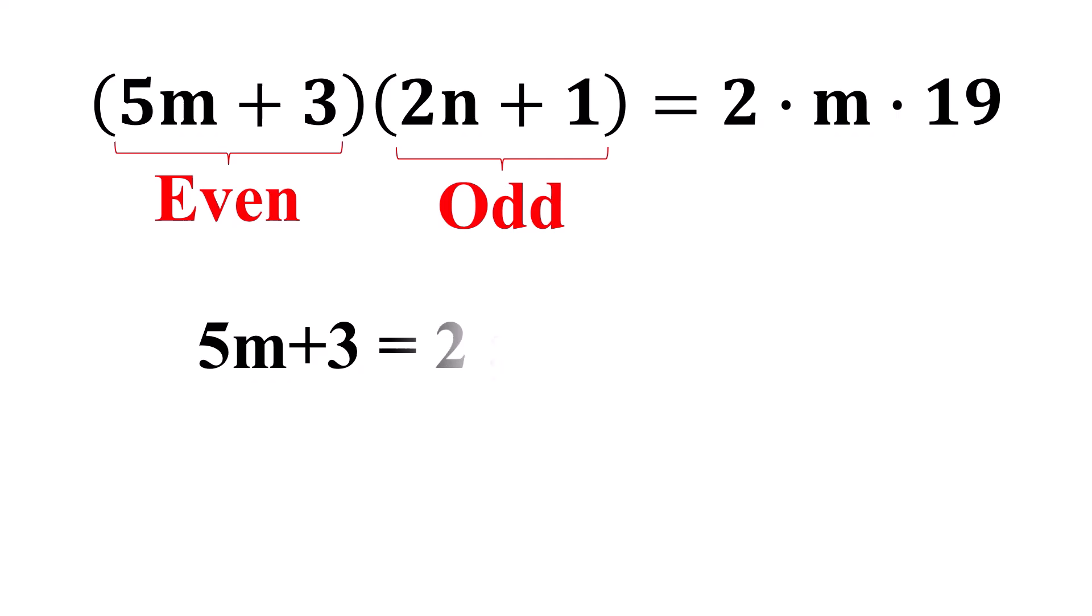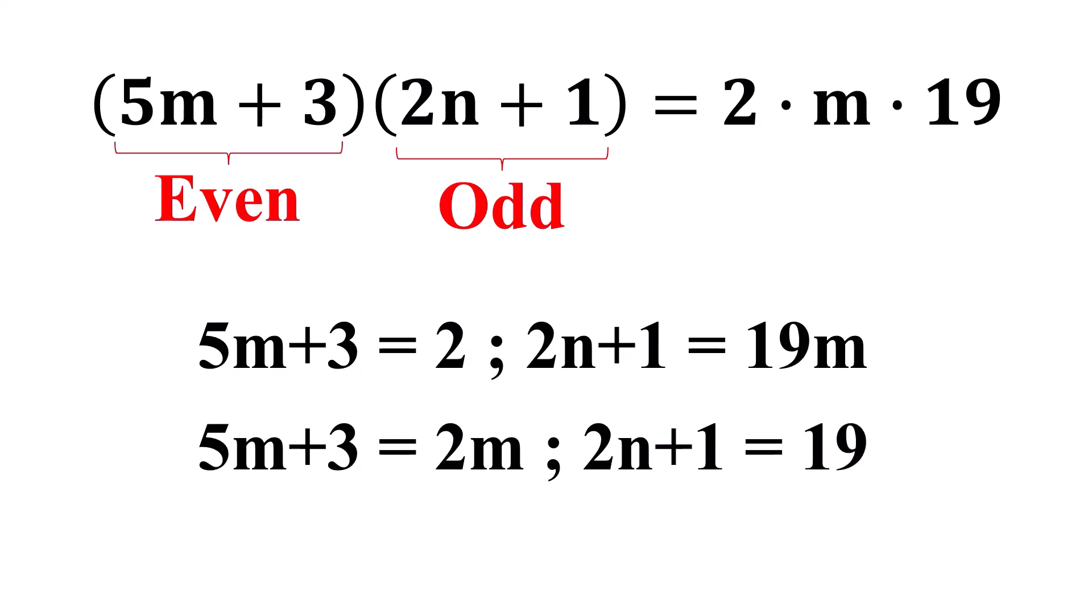5m plus 3 equals 2, 2n plus 1 equals 19m. 5m plus 3 equals 2m, 2n plus 1 equals 19. 5m plus 3 equals 38, 2n plus 1 equals m.